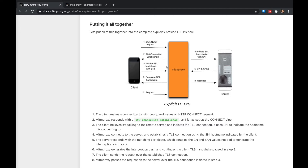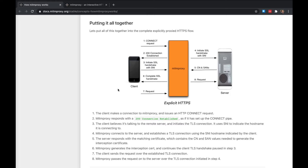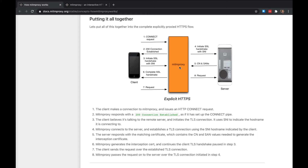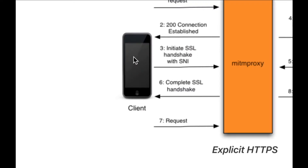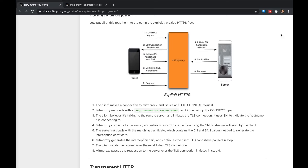What mitmproxy does is break this by establishing two TLS sessions: one between the client and the proxy, and another between the proxy and the server — decrypting and terminating the traffic, which is called TLS termination. To do that it needs to serve you the mitmproxy certificate. The moment it does that, things break because you don't trust the mitmproxy certificate authority. That's why we'll go through installing mitmproxy and trusting its CA, because mitmproxy generates certificates dynamically — for example, a wildcard certificate for google.com every time you connect.